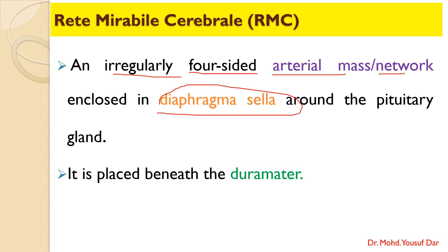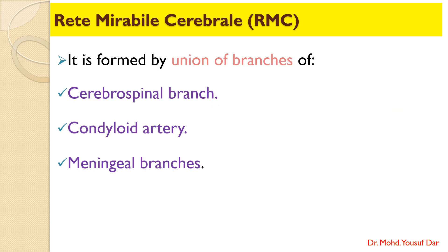The RMC is enclosed in the diaphragma sellae and is present around the pituitary gland. The diaphragma sellae is a fold of the dura mater that surrounds the sella turcica of the sphenoid bone. The RMC is placed beneath the dura mater. This arterial mass is formed by the union of branches of different arteries.